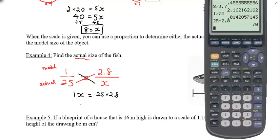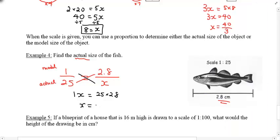So to solve this, I'm going to ask you once again to cross-multiply. So 1 times x equals to 25 times 2.8. Well, that's 25 times 2.8. That, I believe, is 70. So in this case, x, or the actual length, is 70 centimeters. Okay?